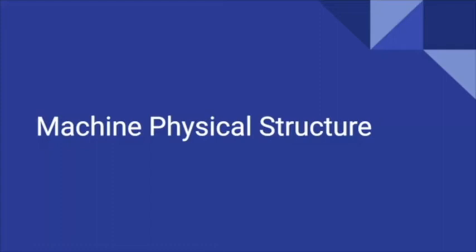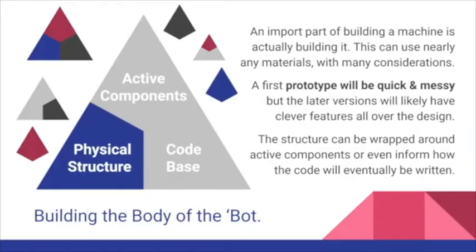Those are the big ideas and philosophical pieces for thinking about machines. Now let's drill down on how you build a thing — where does the structure come in? We're focused on the bottom left corner of our triangle. Our first prototypes are going to be quick and messy. Resurrecting a 3D printer is totally the way to go. We're going to stay focused on how you physically build things so you have some structure to work with, then next week we'll talk about active components, and the week after, building a good code base.